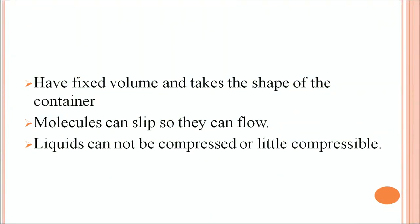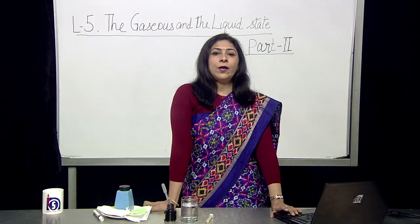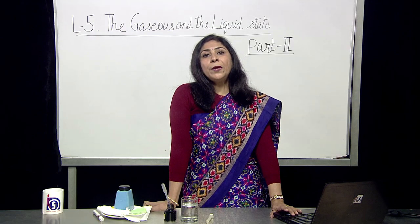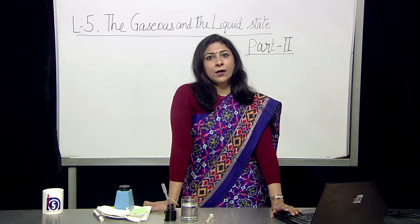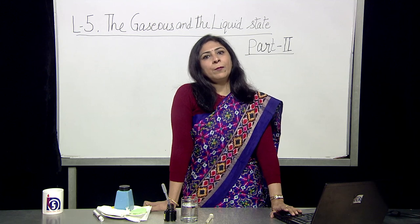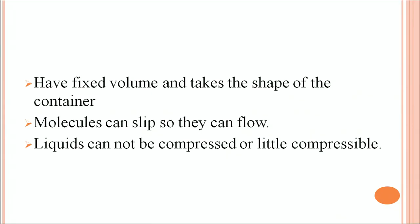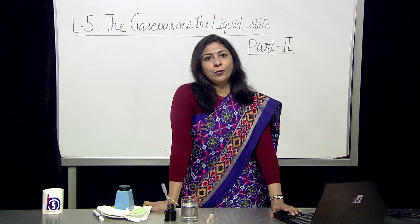Liquids have fixed volume and take the shape of the container. For example, if you put water in a glass, the water takes that shape, but wherever you put it, the volume will always remain fixed. If you take 5 ml in a beaker, 5 ml in a test tube, or 5 ml in a cup, it will remain the same volume. Now, molecules can slip, so they can flow — that is a very important point because fluidity is present in liquids. They always flow from higher to lower level.